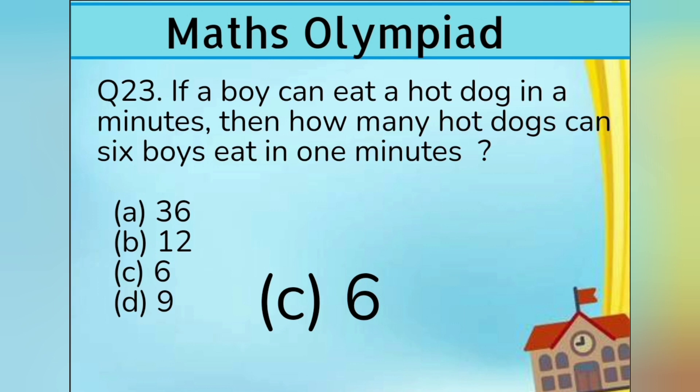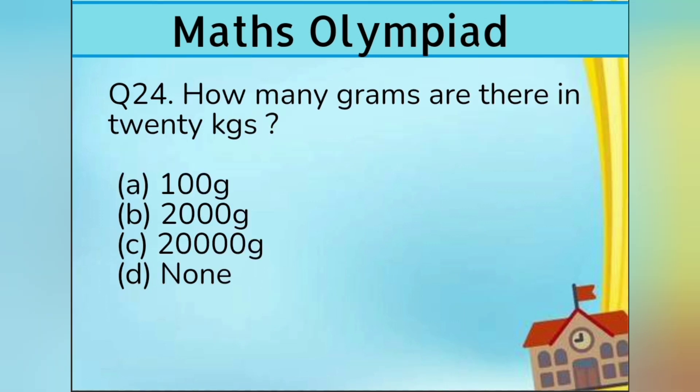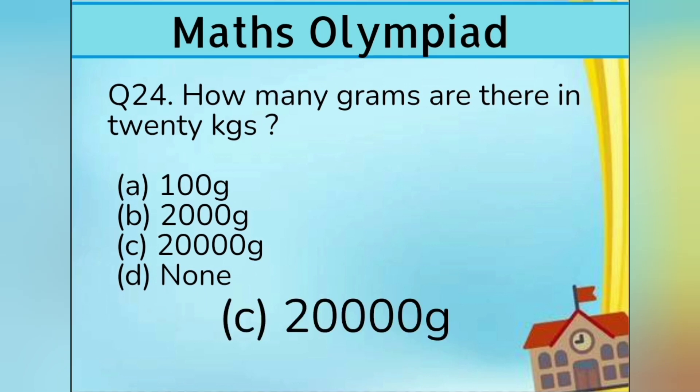Question number 24. How many grams are there in 20 kgs? Option A 100 gram, Option B 2000 gram, Option C 20,000 gram, Option D none. Answer is Option C 20,000 gram.